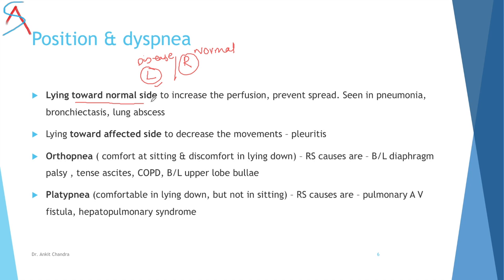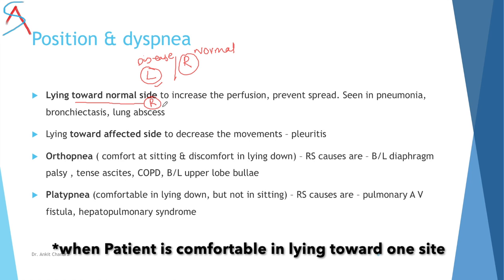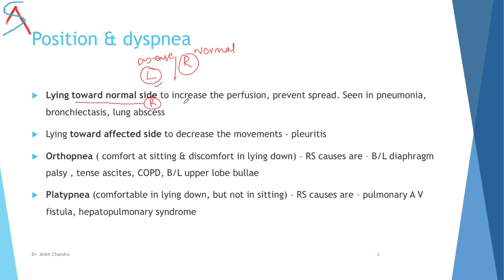In postural variation: if the patient lies toward the normal (unaffected) side — for example, right lateral if left side is diseased — it is done to increase perfusion and prevent spread of disease. This is seen in pneumonia, bronchitis, or lung abscess. If the patient prefers to lie on the affected side, it decreases movement of that side; this is seen in pleuritis.